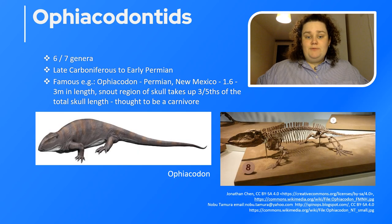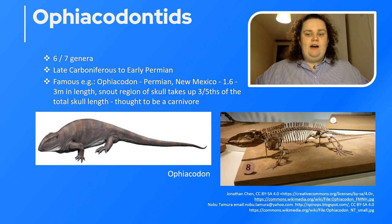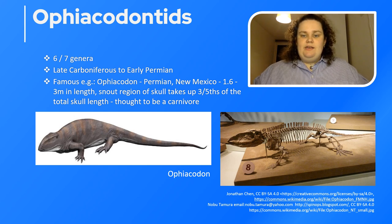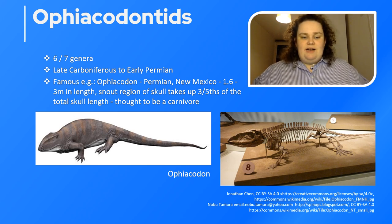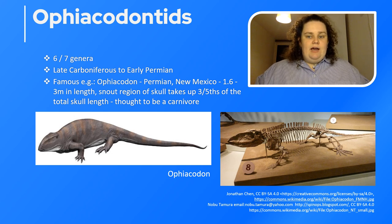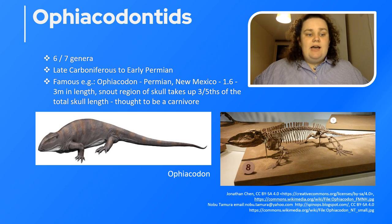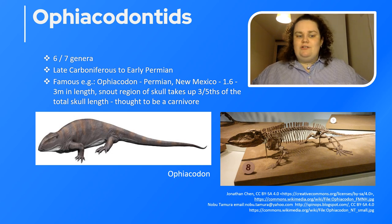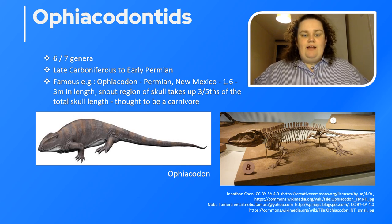Moving on to the ophiacodontids — previously placed at the basal end of the synapsid tree, though this has been reshuffled. There are six to seven genera ranging from the late Carboniferous to the early Permian. They are early eupelycosaurs, the clade that encompasses all mammals and their closest extinct relatives. Their lifestyle is debatable — many were thought to be aquatic or semi-aquatic, but more recent studies suggest terrestrial habits. The most famous ophiacodont is Ophiacodon, found in Permian-age rocks in New Mexico, roughly 1.6 to 3 meters in length, with the snout taking up three-fifths of the total skull length. It is thought to have been a carnivore.